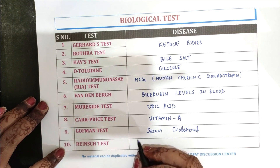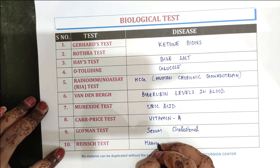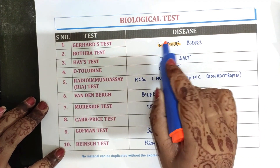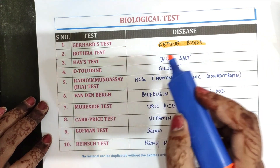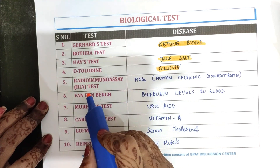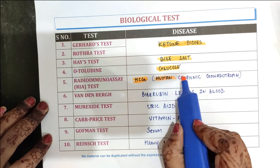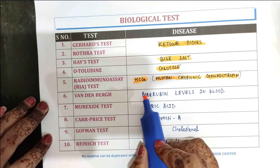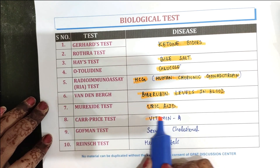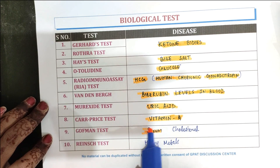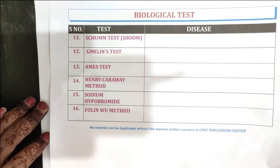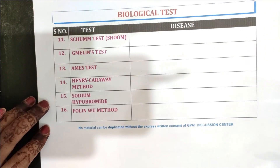To recap: the Murexide test is for the estimation of uric acid; the O-Tolidine test is for the estimation of glucose; the Rhea radioimmunoassay test is for detection of HCG; the Van Bainburg test is for bilirubin levels in blood; the Car Price test is for vitamin A; the Goffman test is for serum cholesterol; and the Rinse test is for the detection of heavy metals.